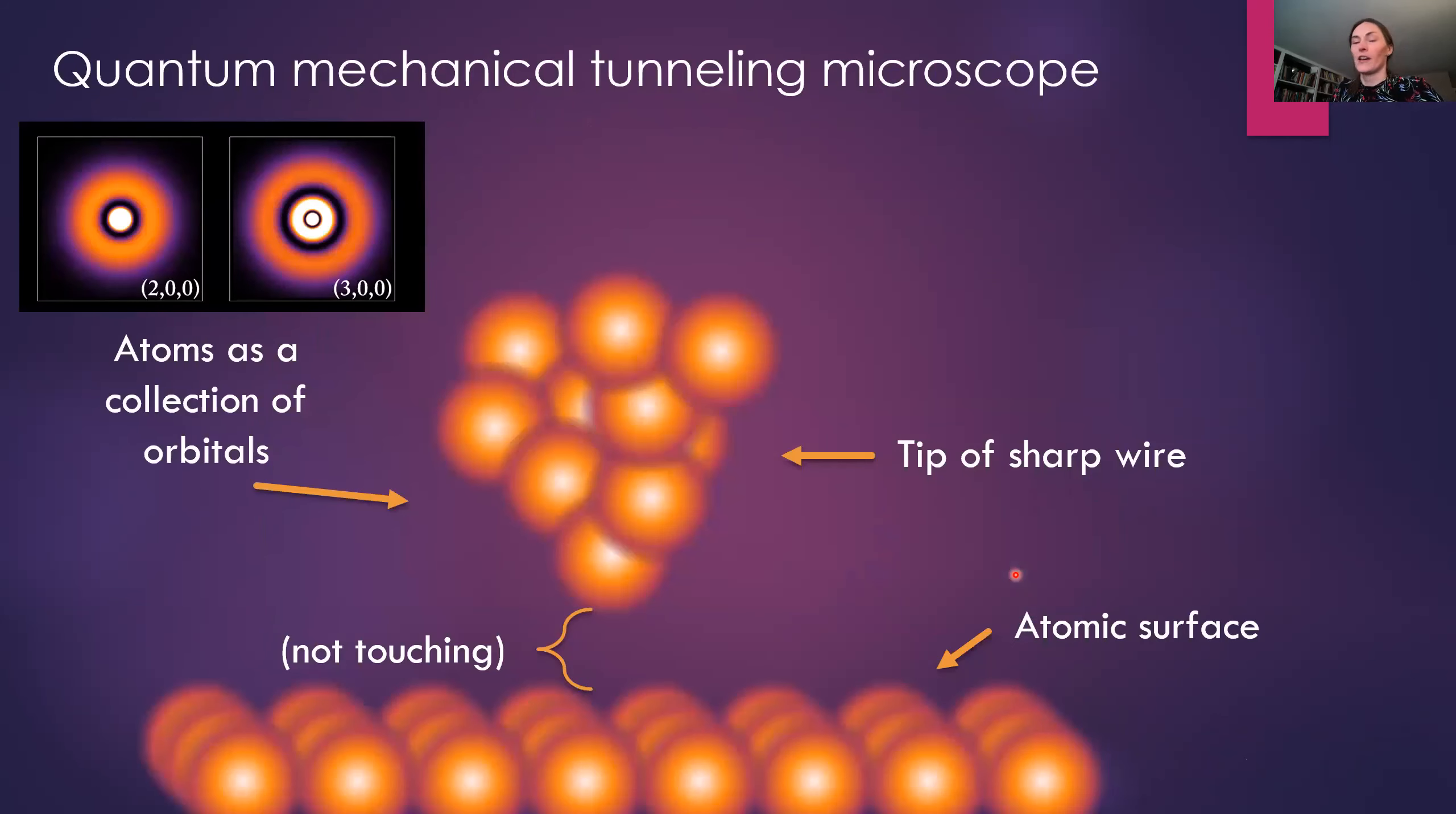I'm going to tell you about a quantum mechanical tunneling microscope. So here's our starting point. We take a sharp wire, this could be a piece of platinum or gold. And we're going to represent the atoms at the very end of the wire as a collection of orbitals. Now, instead of seeing this as an atom, imagine it as an orbital so that you're seeing the probability distribution of where the electron in the atom could be. And then we take an atomic surface that we want to study, and we put the tip of wire very close to the surface, but not touching it.